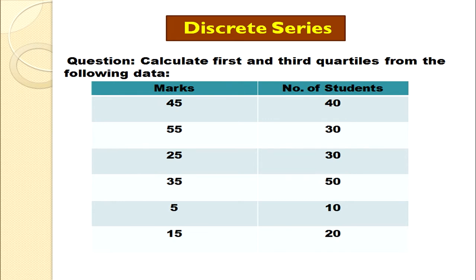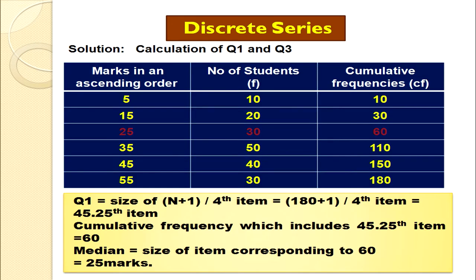The question states: calculate the first and third quartile from the following data. Marks and number of students are given. First, we arrange the data in ascending order. Next, we find the cumulative frequencies: 10, 10+20=30, 30+30=60, 60+50=110, 110+40=150, 150+30=180. We cross-check: the sum of frequencies should also equal 180 — the total number of observations.